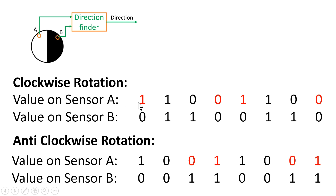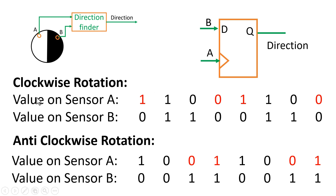Let us assume we apply the output of sensor A as the clock signal to this direction finder. Now let us observe the value of sensor B whenever there is a positive edge on the clock. When the disk rotates clockwise, we expect the direction finder output to be 0. At the positive edge of the clock, the value on sensor B is 0. So if we use a simple D flip-flop with sensor A as clock and sensor B as data input, at the positive edge, input B is 0, so Q becomes 0 — which meets the expected behavior.